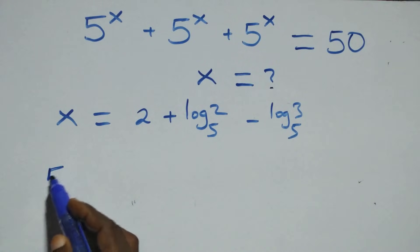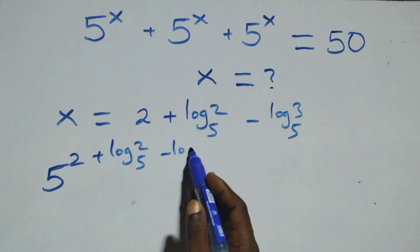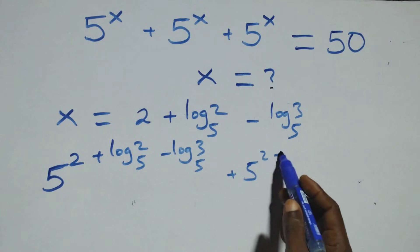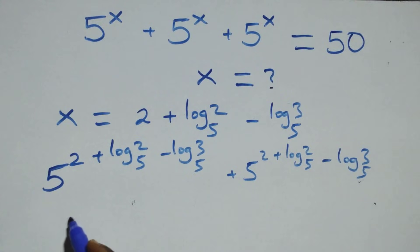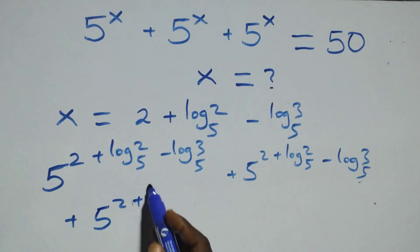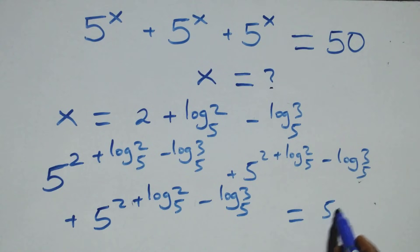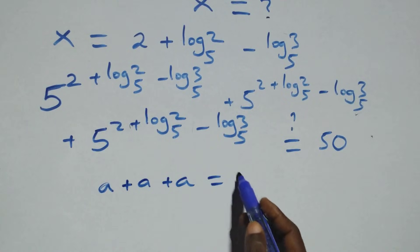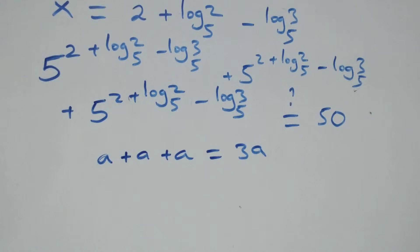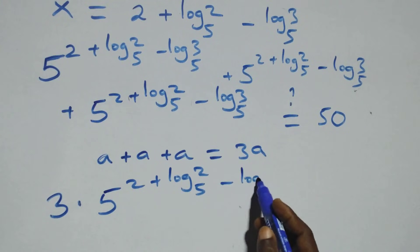We verify by substituting x into the original equation. We have 5 raised to power (2 plus log 2 base 5 minus log 3 base 5), plus the same term again, plus the same term again, equals 50. Since all three terms are identical, this becomes 3 times 5 raised to power (2 plus log 2 base 5 minus log 3 base 5) equals 50.